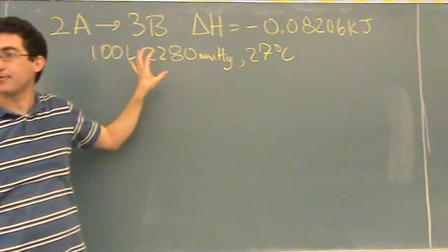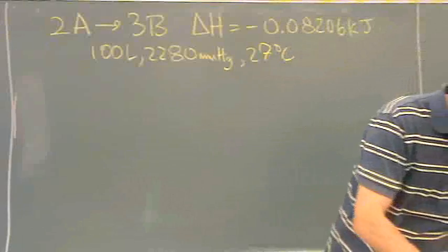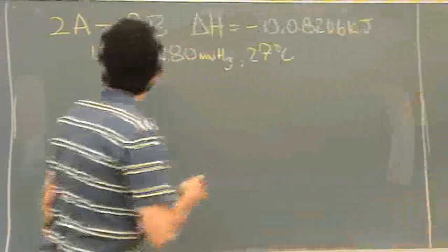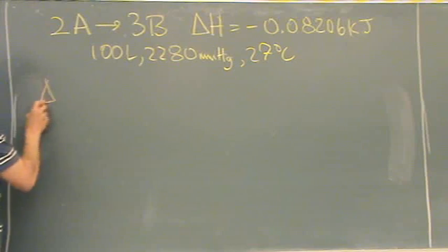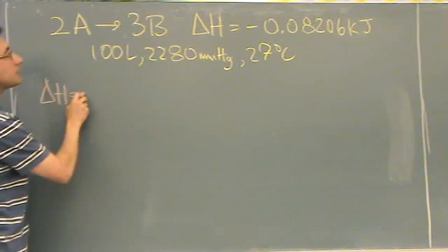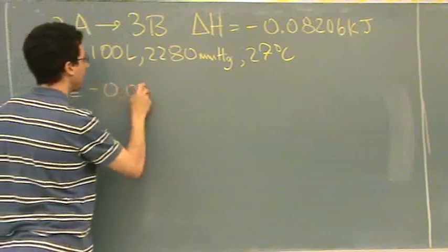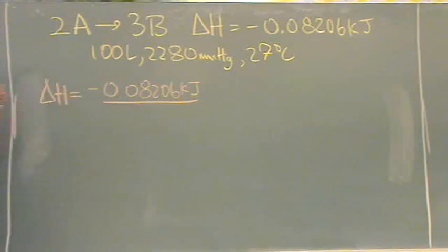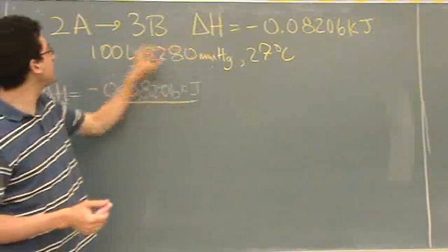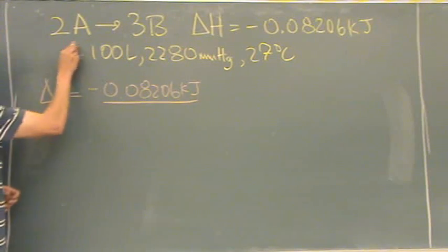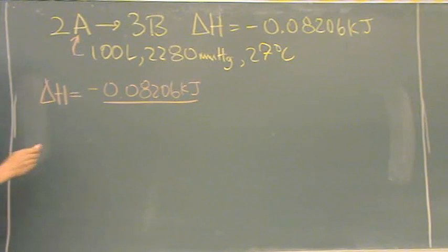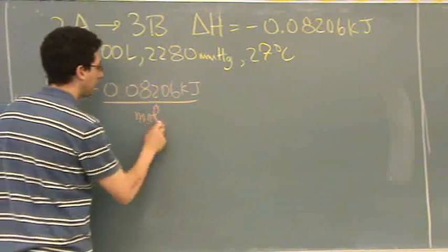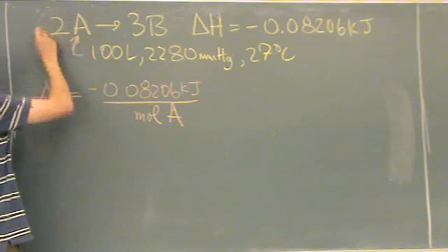Okay, so with this specific information we can specify delta H. We already have a delta H but we're going to specify using this given information. So what we're going to do is say delta H equals negative 0.08206 kilojoules. And now to make it specific for this reaction we look to the molecule of interest. Well in the question all this information is about A.